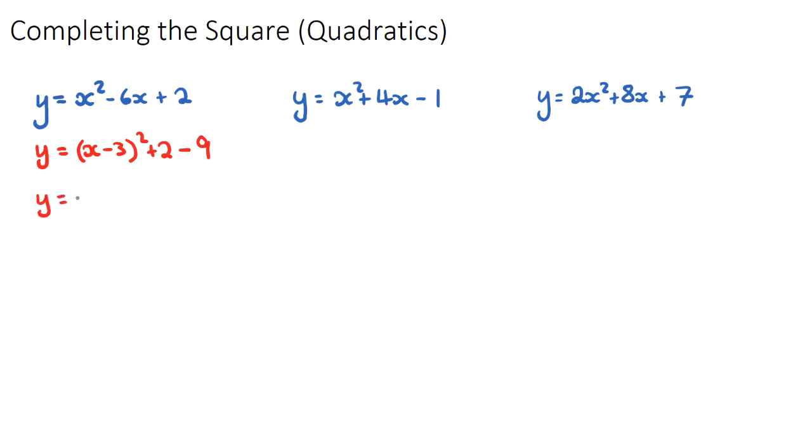So if we were to tidy this up, we're going to get x minus three squared, and then minus seven. Now, I'll briefly explain why we're doing this. It's because if we want to complete the square, we're turning a quadratic from its general form into its vertex form. This is the vertex form.